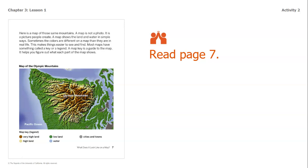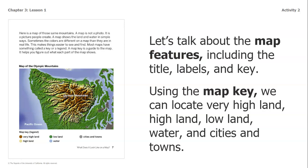This is still a map showing the Olympic Mountains, but instead of a photo like the last picture, this is a map. We're going to talk about the map's features including the title, labels, and key. Using the map key we can locate very highland, highland, lowland, water, and cities and towns.